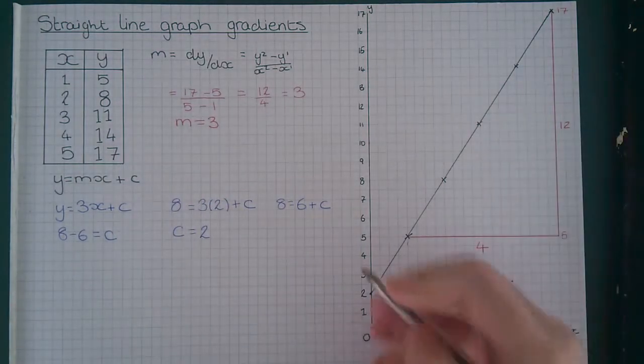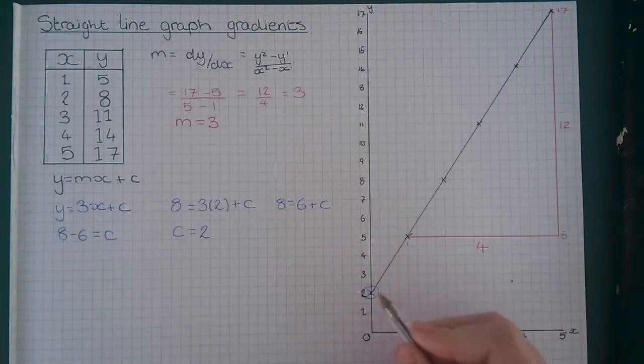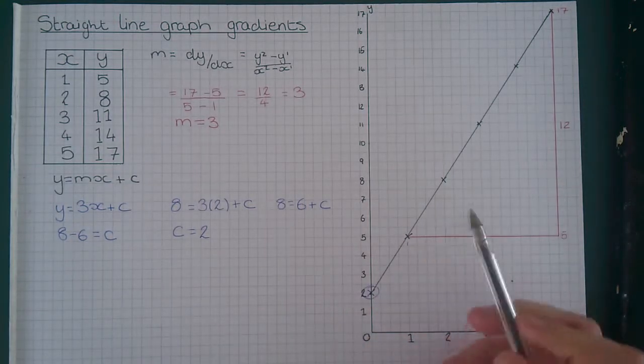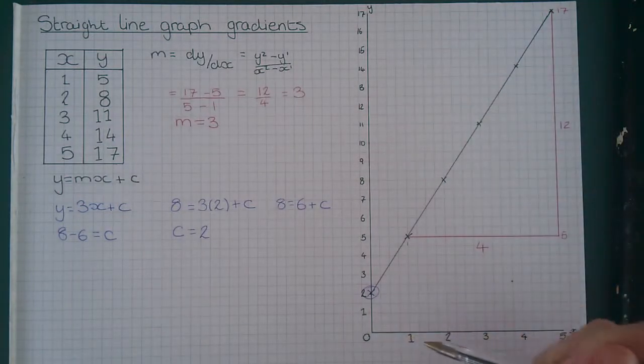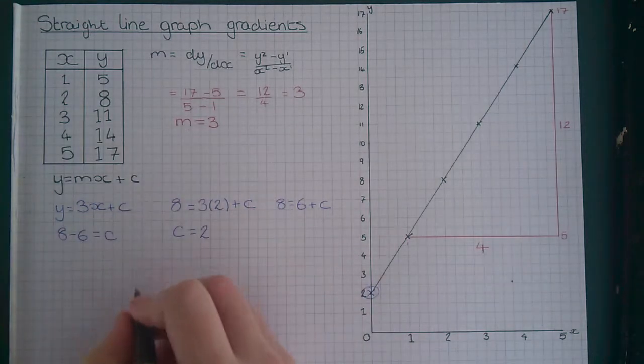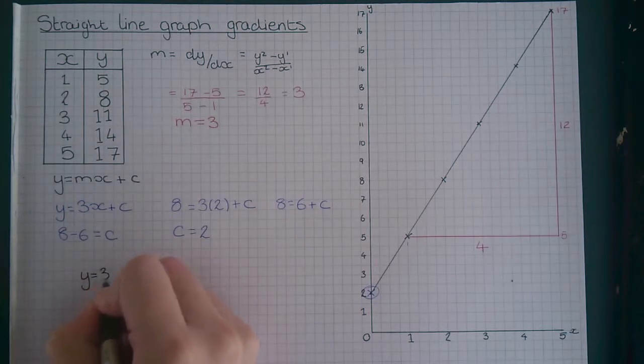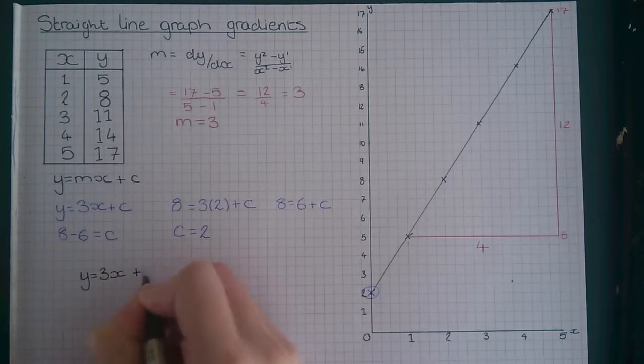On this example, you could read that off the graph because you can see that is the y-intercept and you can see it crosses at 2. But in most graphs, it's not going to be as accurate to read it off the graph and you need to use this method. We've now worked out the gradient and the intercept of the y-axis. So we now know that our final equation is y equals 3x plus 2.